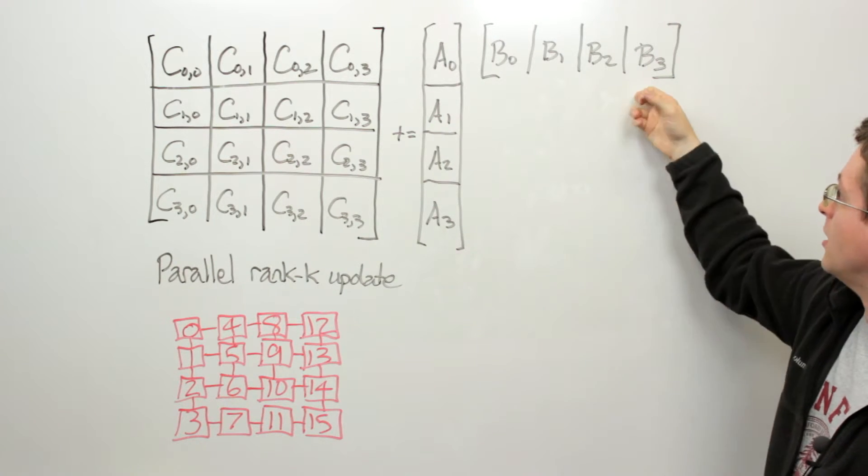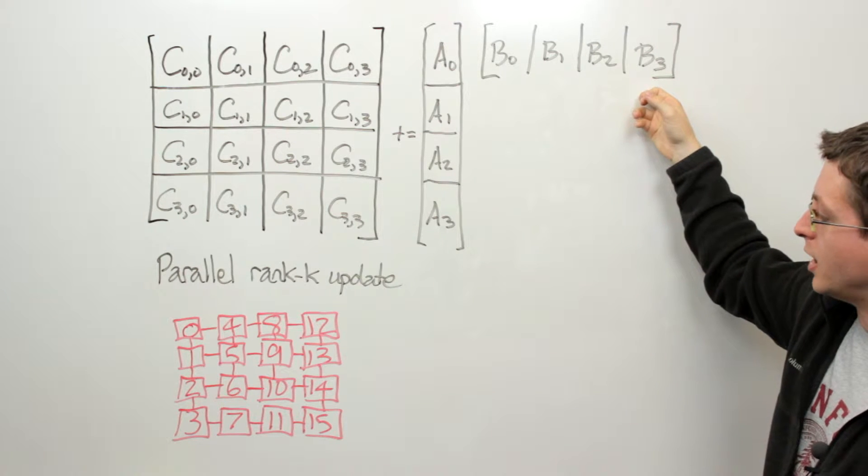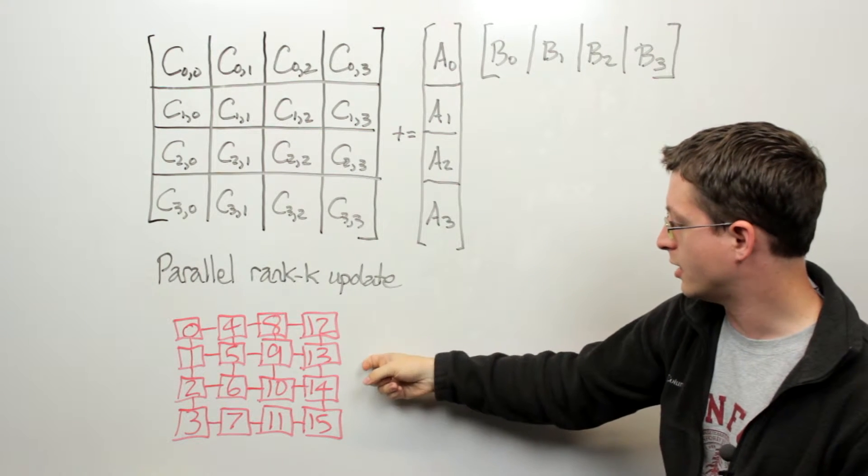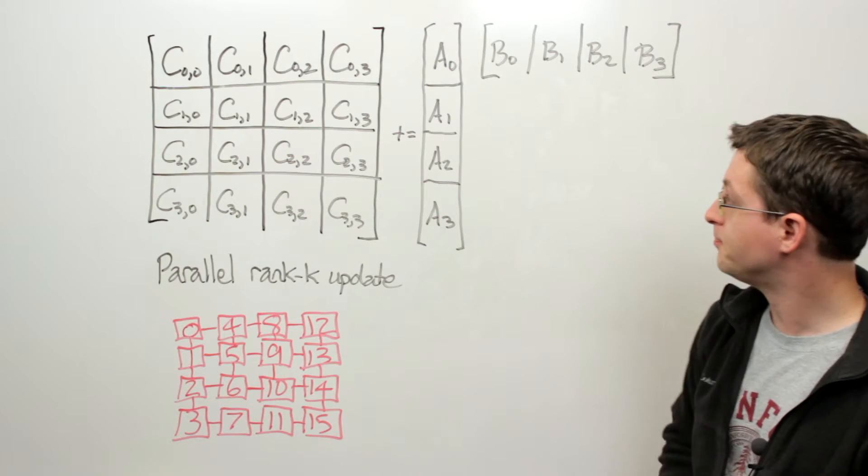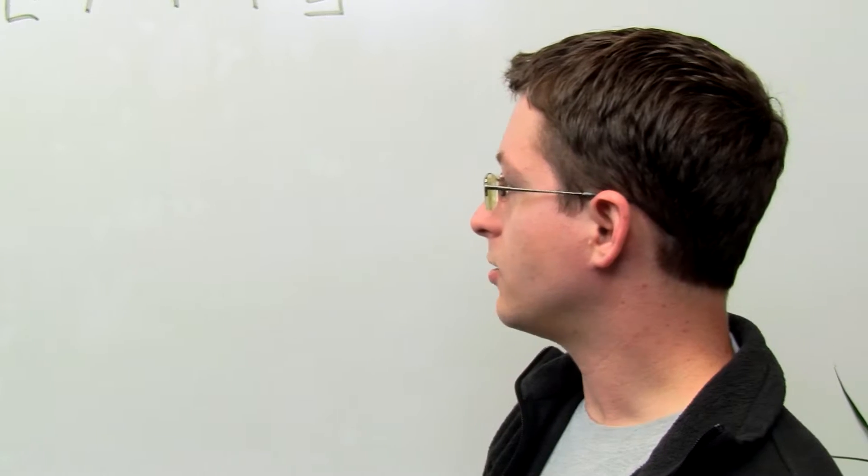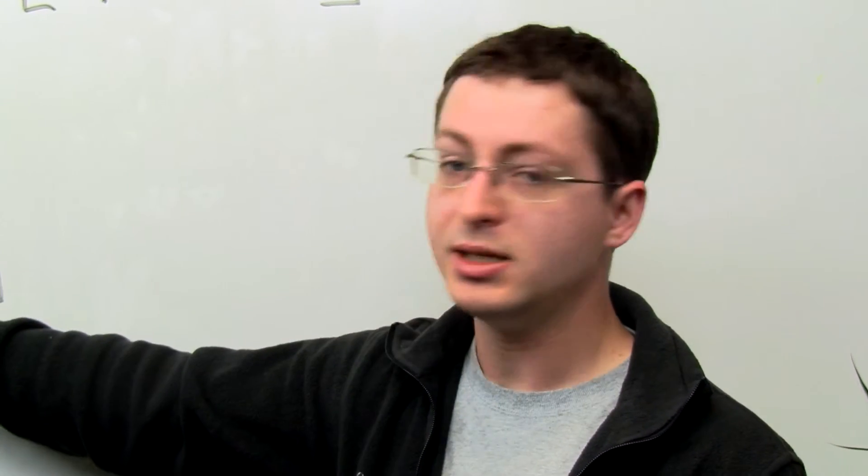So for instance B3 should be owned by processes 12, 13, 14, and 15. So that's what we need in order to be able to locally compute the update to C.